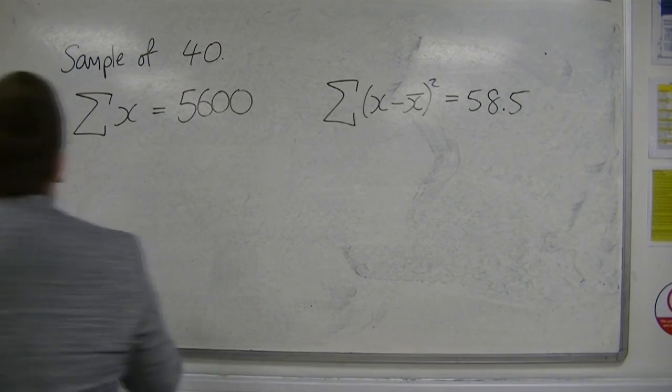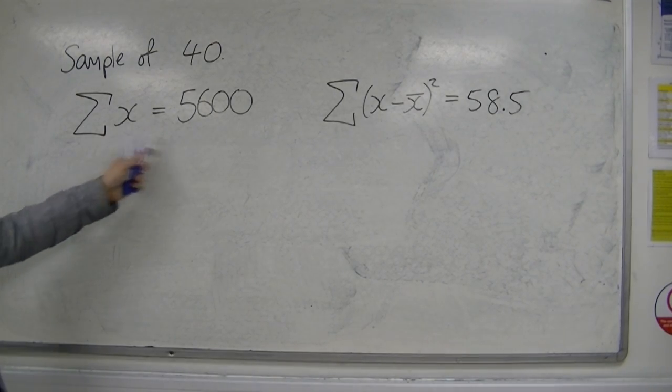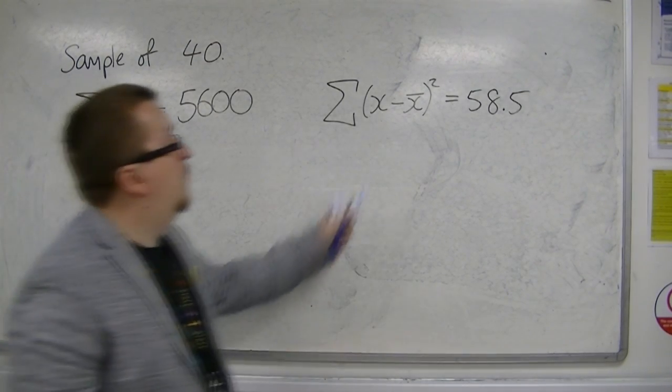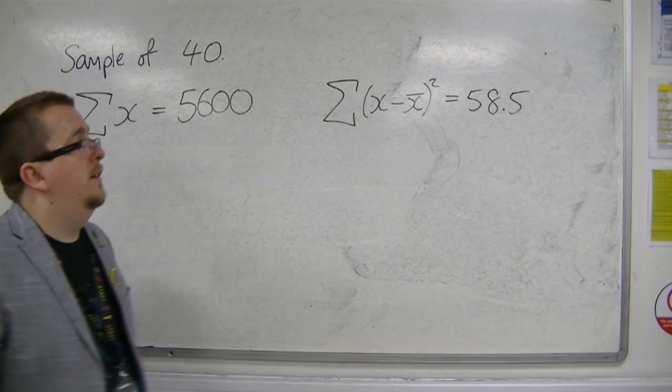We might be told that there is a sample of 40, and we've added all those 40 bits of data together and we get 5,600, and we've worked out that x minus x-bar all squared is equal to 58.5.